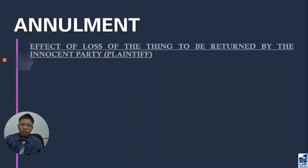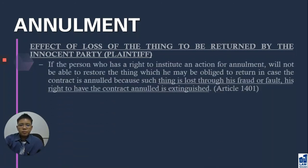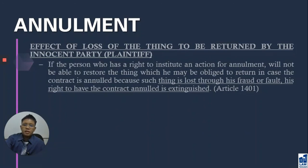What if it is the innocent party who loses the object he is supposed to return? In our example, the innocent party is supposed to return the gold necklace belonging to the guilty party. There are two rules here: Articles 1401 and 1402. Under Article 1401, if the injured party cannot return the object because it is lost through his own fraud or fault, his right to have the contract annulled is extinguished — because this innocent party is not so innocent after all.